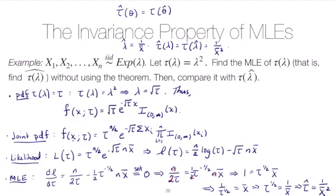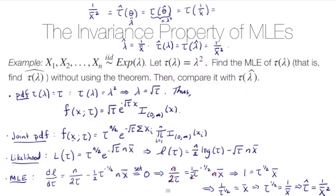That's the MLE of τ, and this was the long way: actually finding the MLE by reparameterizing the PDF and the likelihood. The short way uses the invariance property — since τ(λ) = λ², we just plug in the MLE of λ, which is 1/x̄, and square it, giving 1/x̄² — exactly the same result.